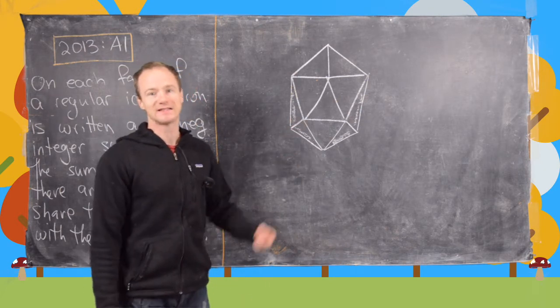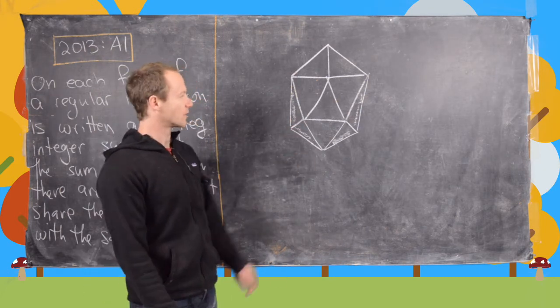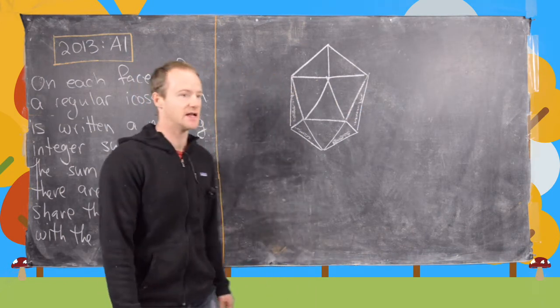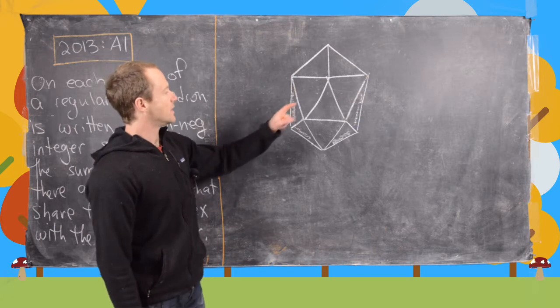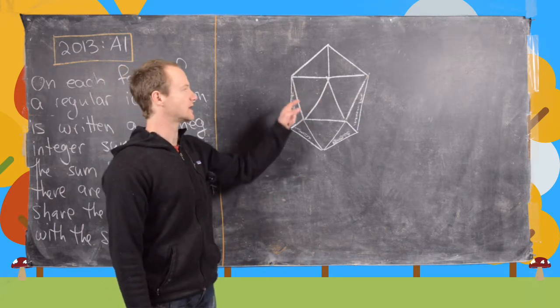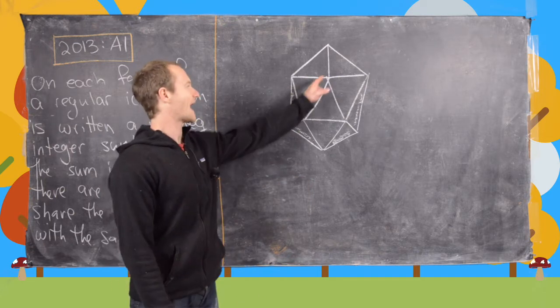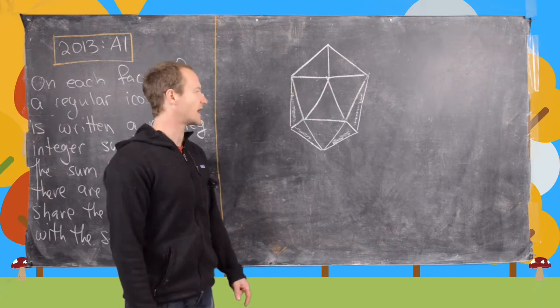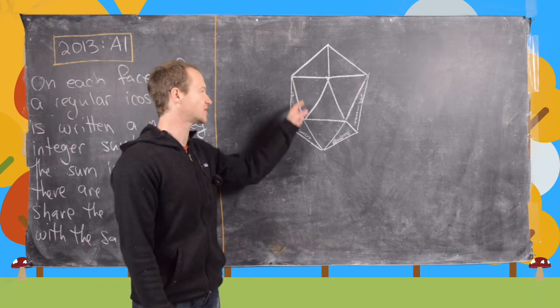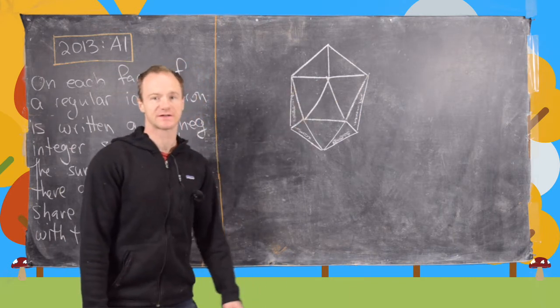So I've done my attempt at drawing an icosahedron on the board right here. And so the thing to notice is that it's a 20-sided figure where you have all triangles so that it's made totally of regular triangles and at each vertex five triangles meet. And so that's actually what we're going to use to solve this question, the fact that at each vertex five triangles meet.